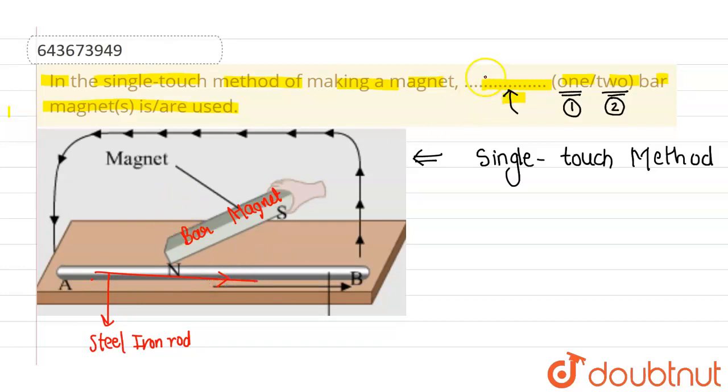Okay, so the blank space will be filled by one, because we are using only one bar magnet. I hope you understood. Thank you.